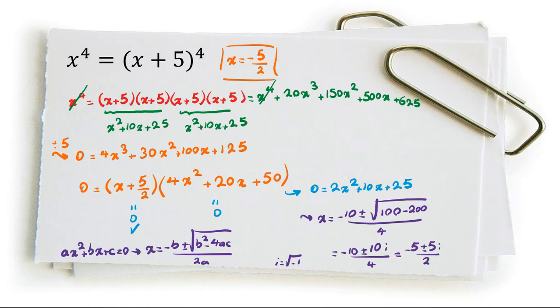We found three solutions for x: negative 5 over 2, and negative 5 plus or minus 5i over 2.